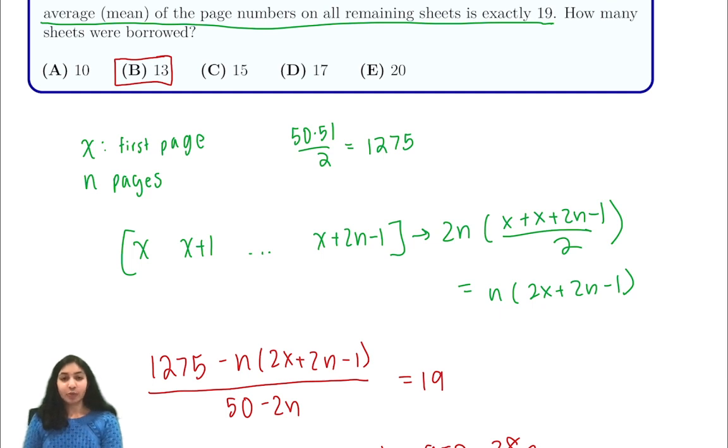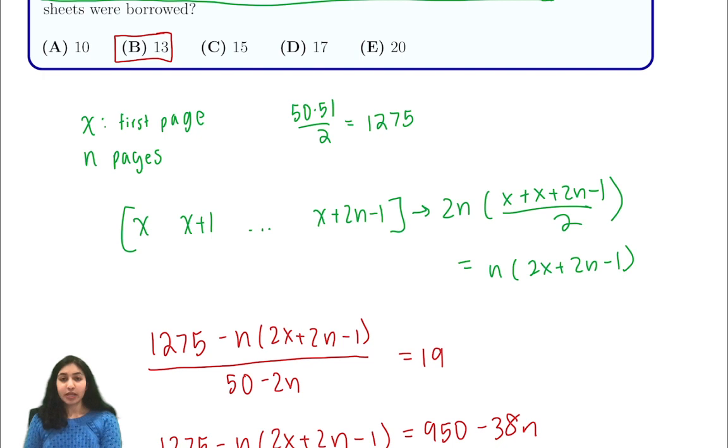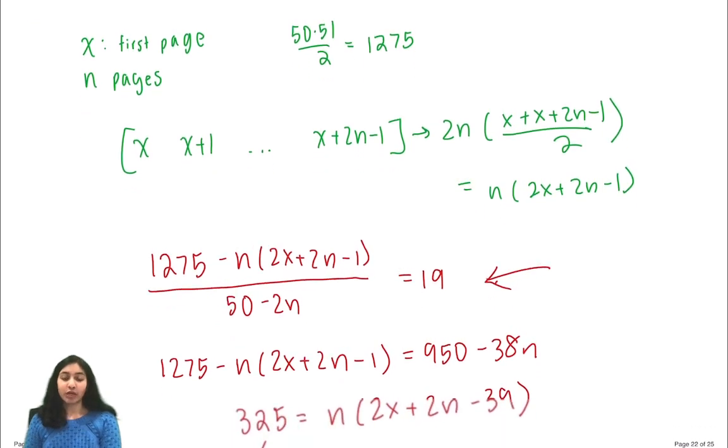So just to recap, we set up a system of equations based on the first page and the number of pages that the roommate took. We used the arithmetic series formula to find their sum and wrote this equation, plugged our values in, and found that 13 would be our answer because it is our only multiple of 325.